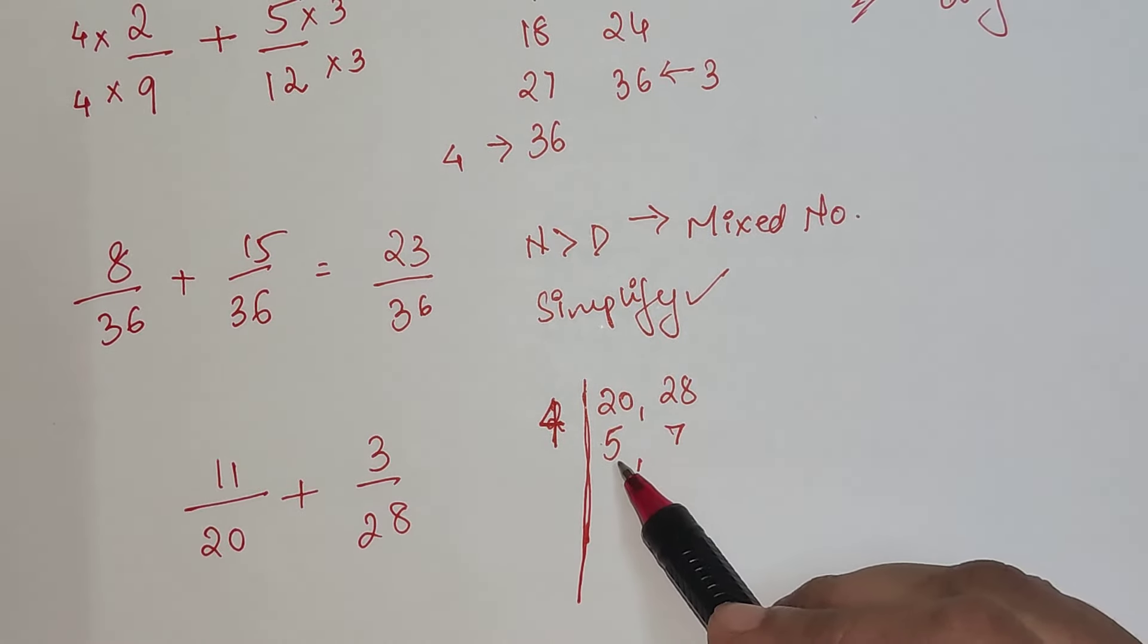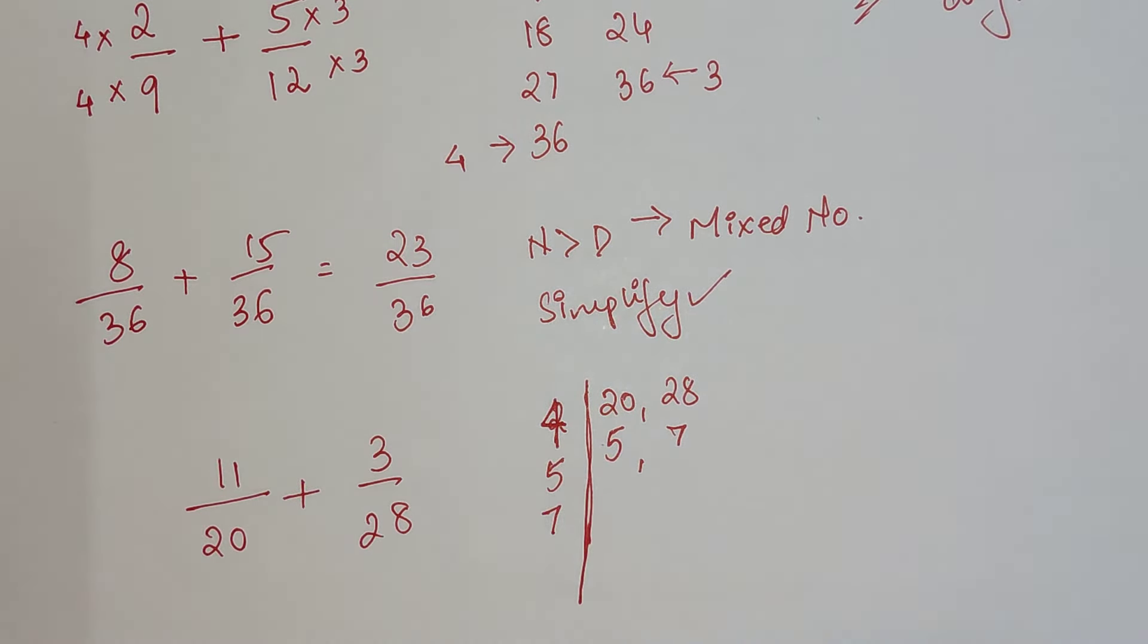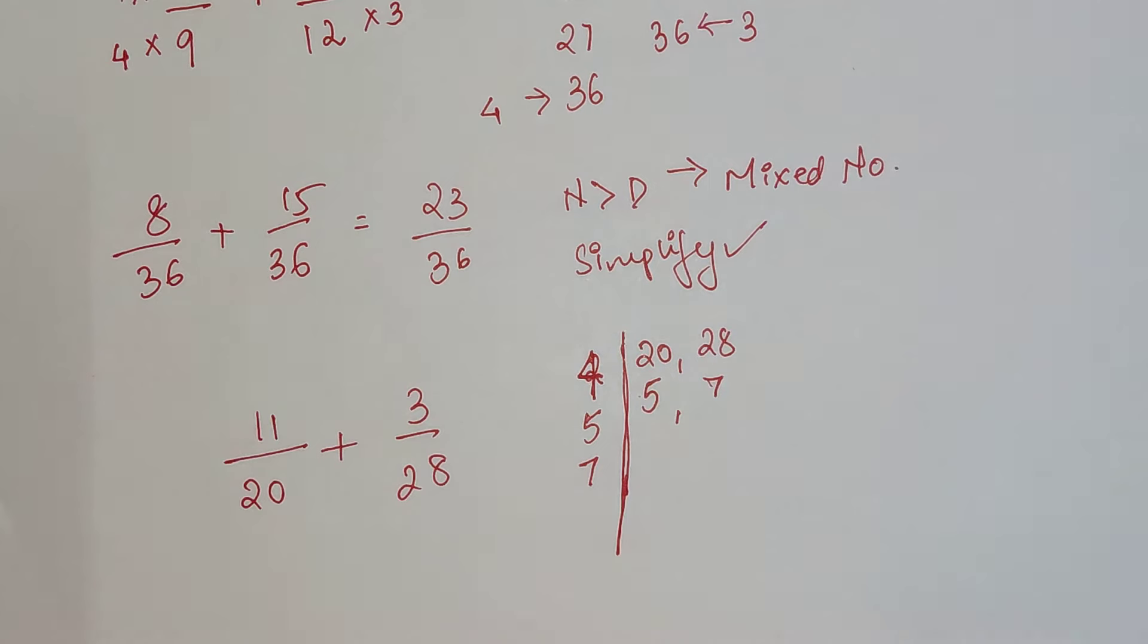Then we come to know that this is 5 and 7. Both are prime numbers, so we don't have to do 5 times 7. We just directly write them. So your entire factor has now changed to 20 into 7.